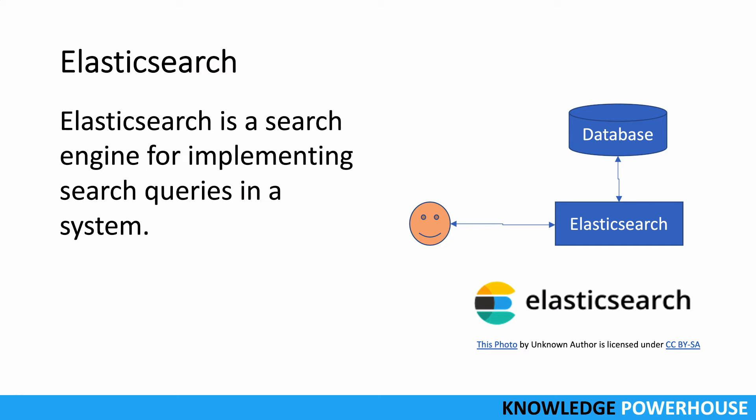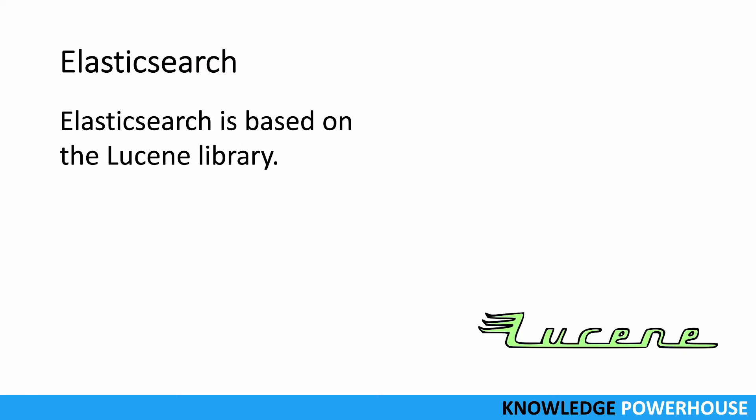So the main crux is: search operations go to Elasticsearch, and read/write operations go to the database — that way you have distributed the responsibilities. Elasticsearch is based on the Lucene library — specifically Apache Lucene, which is a free and open source search engine software written in Java. It is an index-based library. Based on Apache Lucene there is Apache Solr and then Elasticsearch, and that way we get the behind-the-scenes benefits of Lucene in Elasticsearch.